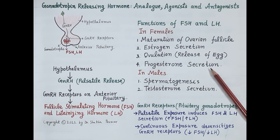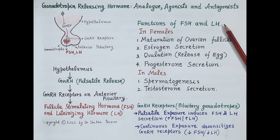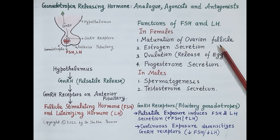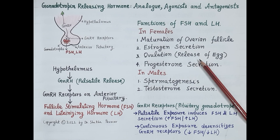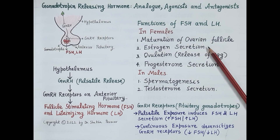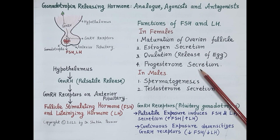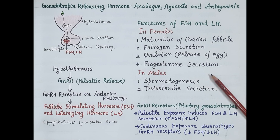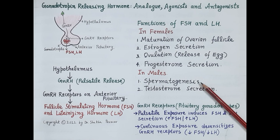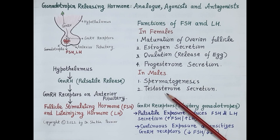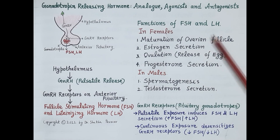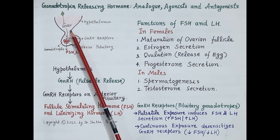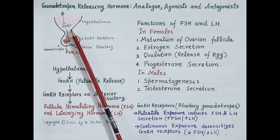FSH and LH are responsible for maturation of follicles, release of the egg, and the process of ovulation. They also cause secretion of estrogen and progesterone from the ovaries — the ruptured follicle develops into corpus luteum which releases progesterone. Similarly in males, FSH and LH induce spermatogenesis and production of sperms, and also mediate release of testosterone from interstitial cells of the testes.